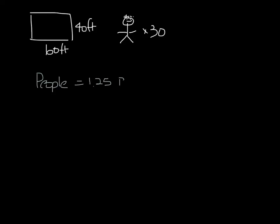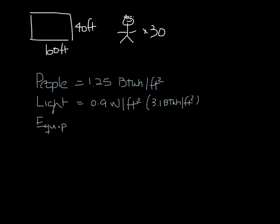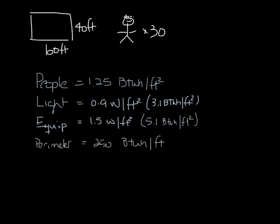1.25 BTU per square foot for people. Lights add 0.9 watts per square foot, which is 3.1 BTU. Equipment, like computers, copiers, etc., 1.5 watts per square foot, which is 5.1 BTU per square foot. And a 250 BTU per square foot perimeter load, which comes to 13.6 BTU per square foot.